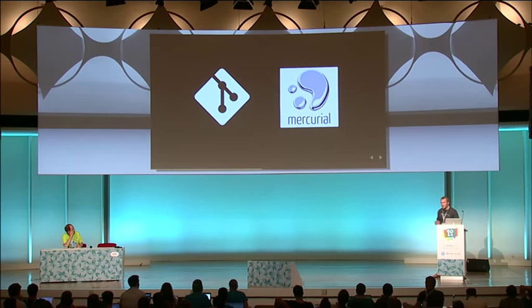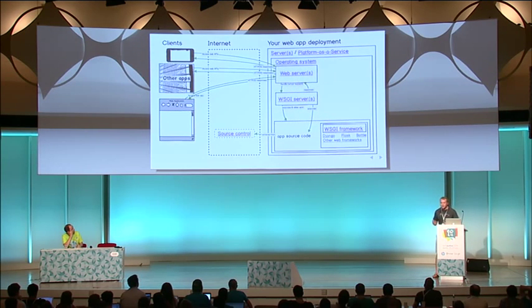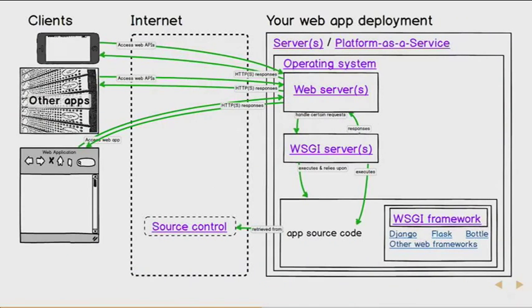We need to get our code onto that server somehow, and that's where source control comes in. We use source control when developing our application but also as part of our deployment process, so we can get either the latest version or a specific tagged version of our code onto production or test servers. The ones mostly used now are Git and Mercurial — distributed version control systems that most Python developers use today. We may host our own Git server, or use something like GitHub or Bitbucket to host it for us and pull it down from those servers.